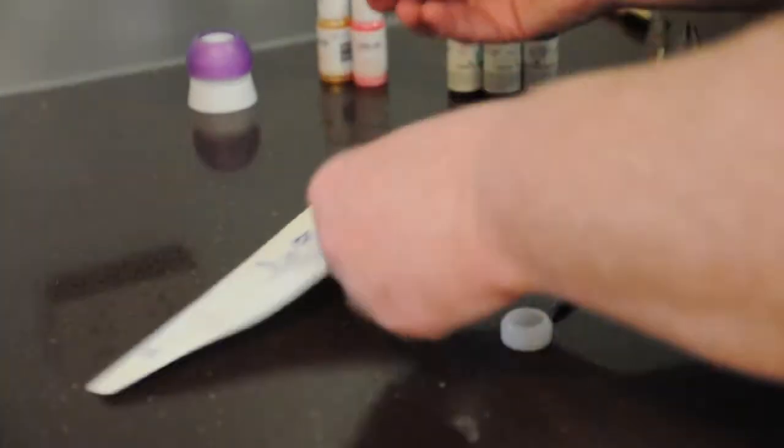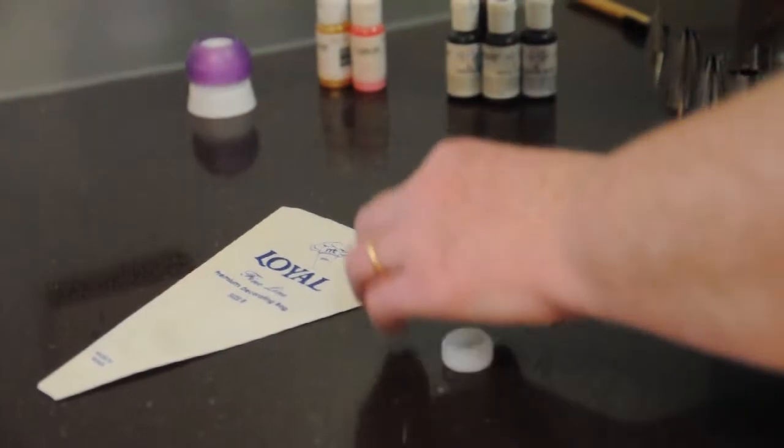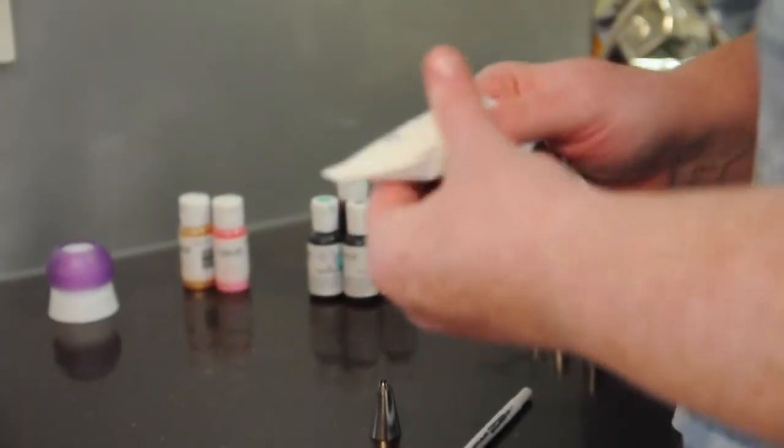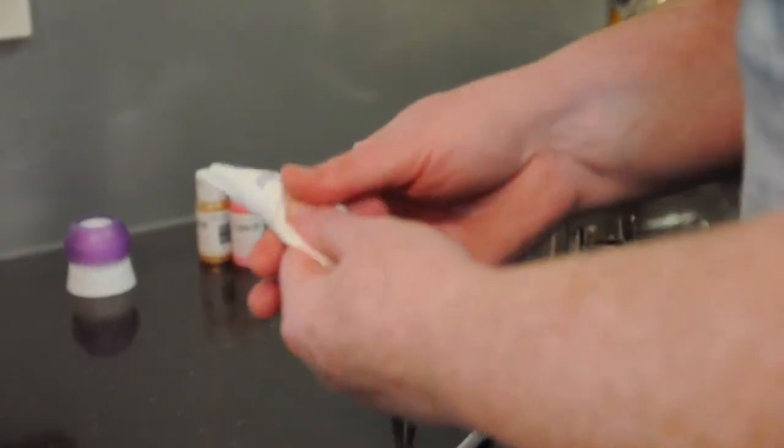First thing you need to do is take the screw off your coupler and pop the coupler body down into the piping bag. You then need to press the coupler firmly up into the top of the piping bag until you can see the screw threads coming through.